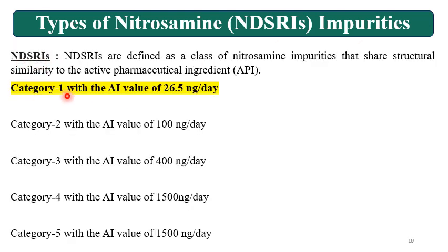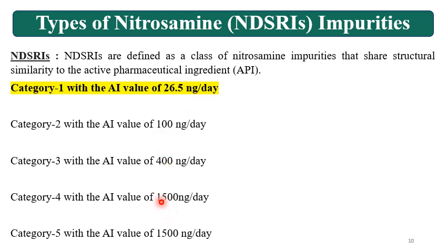NDSRIs are categorized into 5 categories with respective AI limits: Category 1 — 26.5 ng/day, Category 2 — 100 ng/day, Category 3 — 400 ng/day, Category 4 — 1500 ng/day, and Category 5 — 1500 ng/day. Categories 4 and 5 have the same AI values.